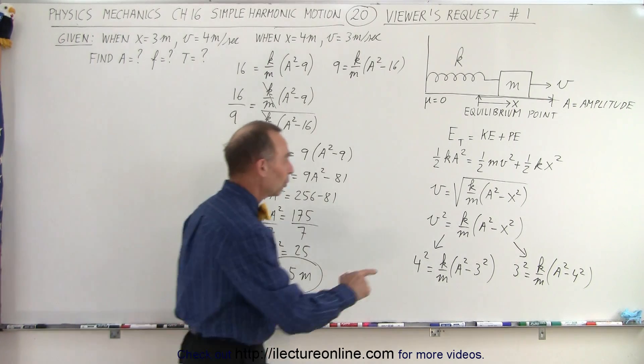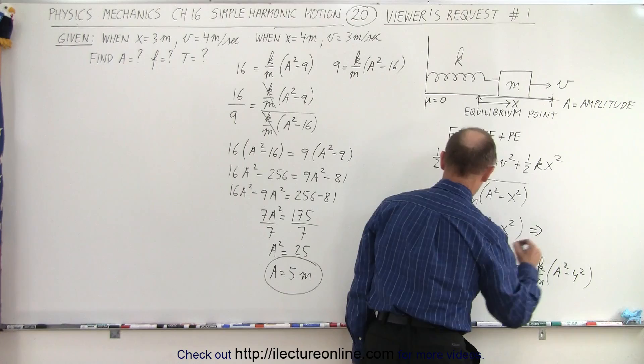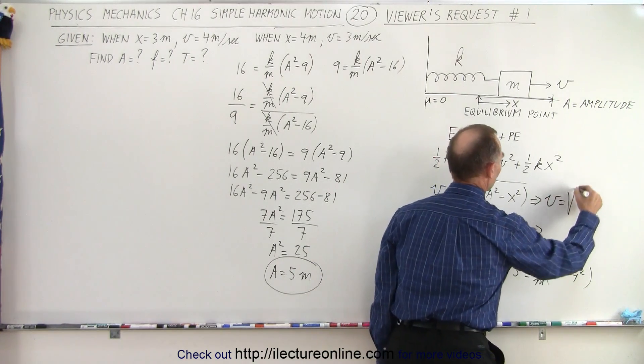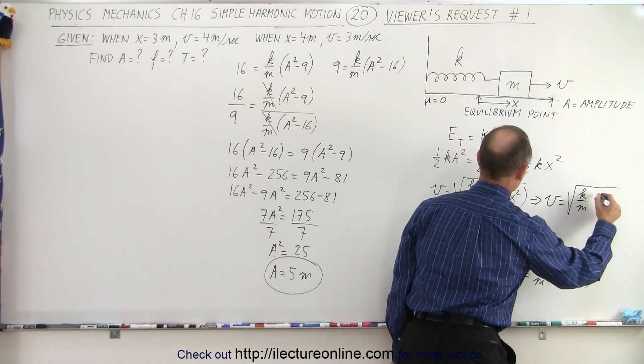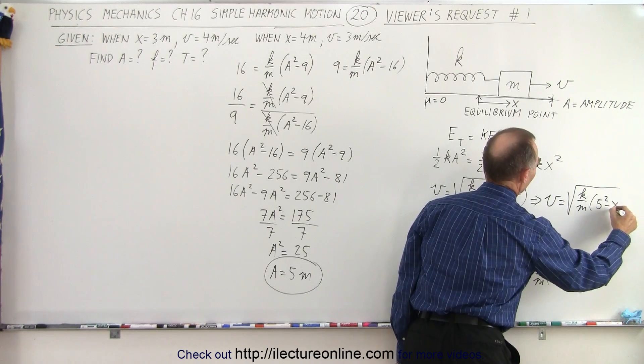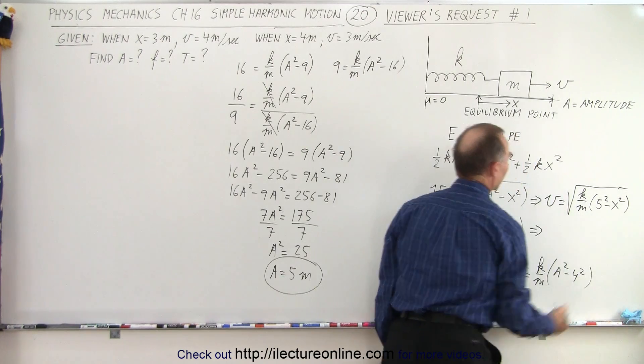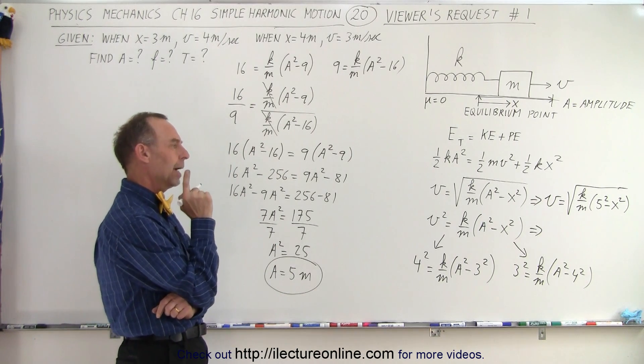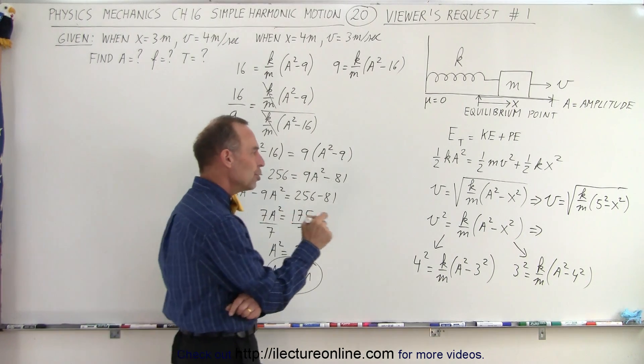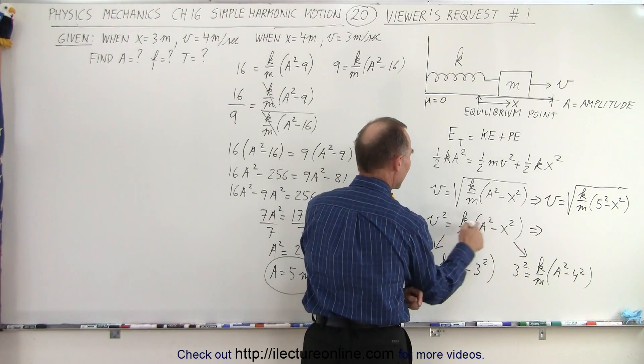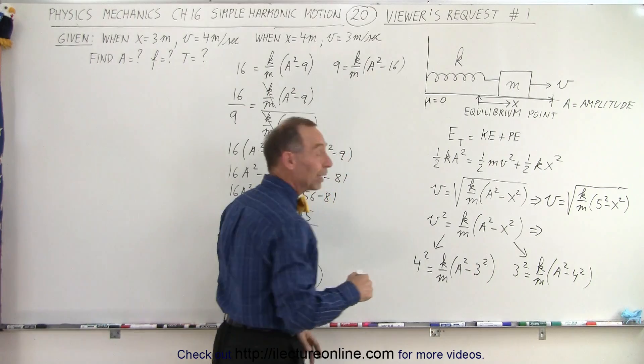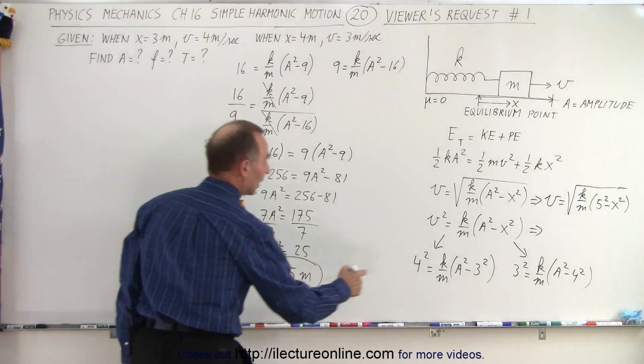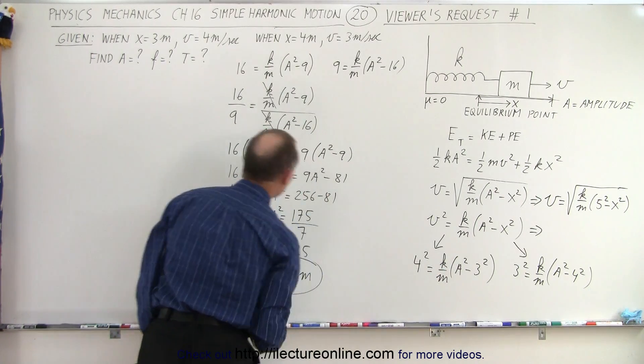Which means that this equation now becomes v equals the square root of k over m times 5 squared minus x squared. The only thing we don't have is we don't have the value for k and for m. However, if we know what a is, and we can take v and x for a particular situation, we can then at least solve for the ratio of k over m. So let's do that. Let's take one of these equations and replace a by what a is equal to.